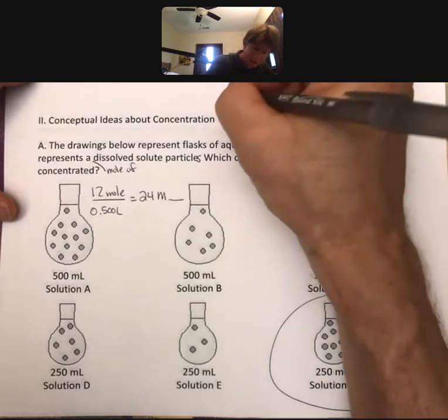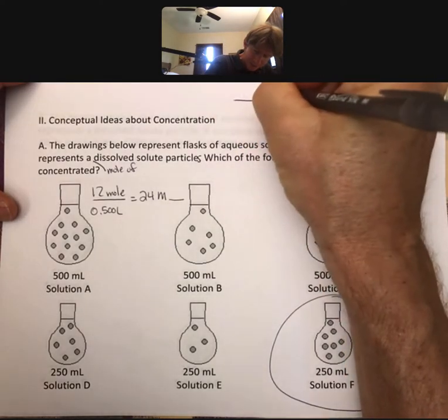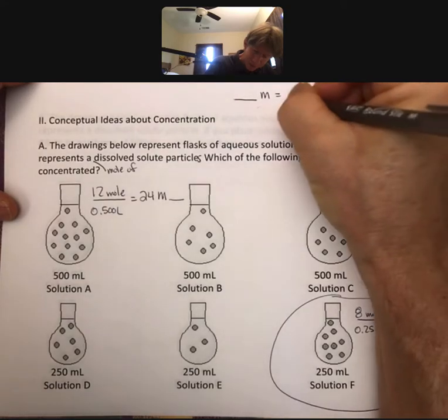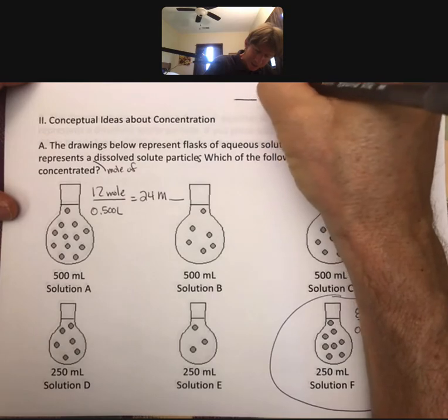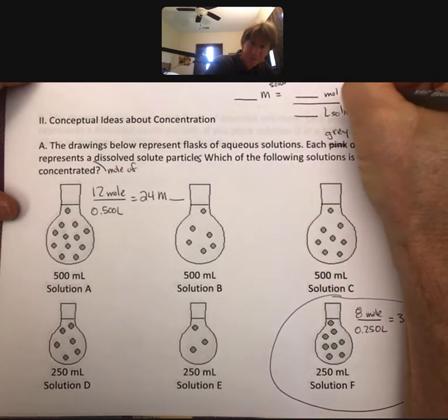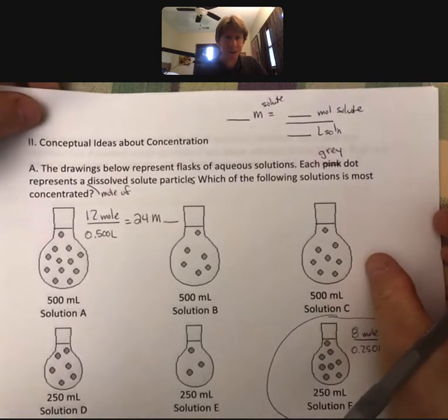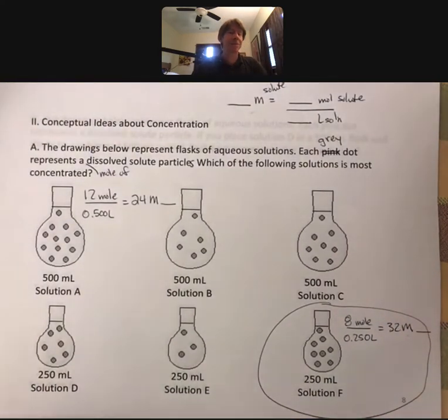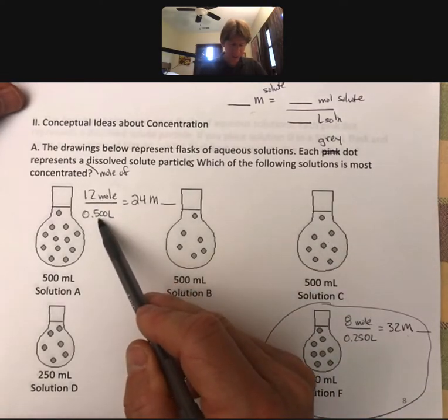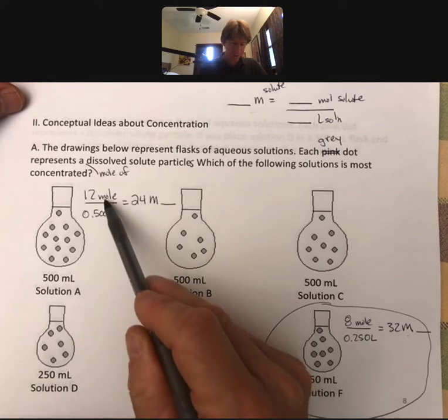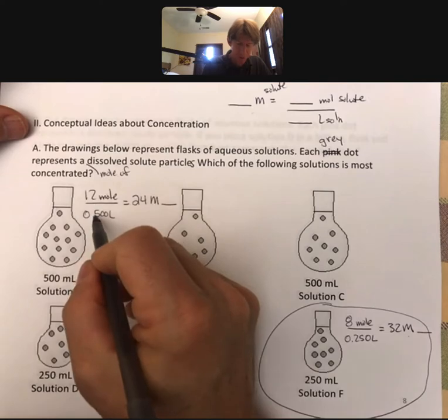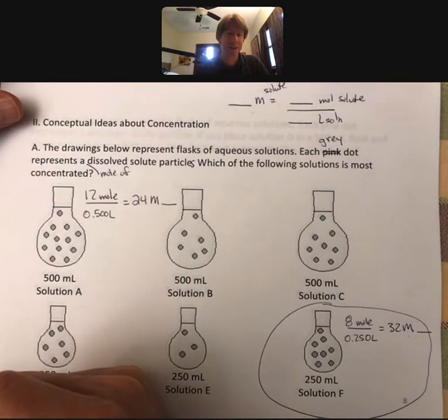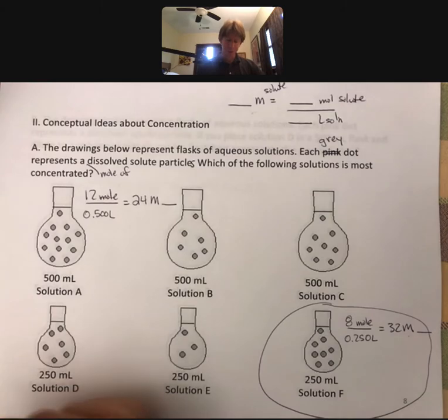You know what molarity is, right? Molarity equals moles of solute over liters of solution. You can plug in some numbers to get an idea, and that's what we've done. So 12 moles over 0.5 liters - well, it doesn't say moles, but you could also just put 12 over 0.5 and get the relative numbers. That's what I mean by conceptual: we want to be able to evaluate just on pictures.